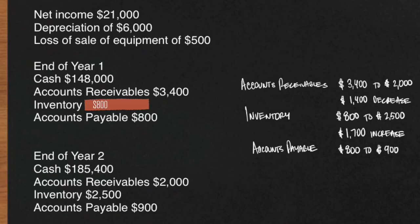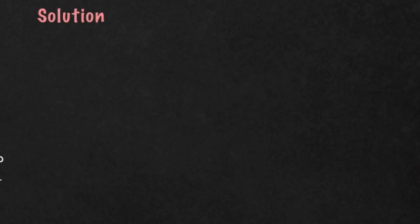Our next account is Accounts Payable. That went from $800 to $900 — that's a $100 increase. This is a different rule than assets; this is a liability. So what's happening here is an increase, so you would add it back. You do the same on the Statement of Cash Flows. Recap: assets, you do opposite; liabilities, you do the same in respect to movement or change.